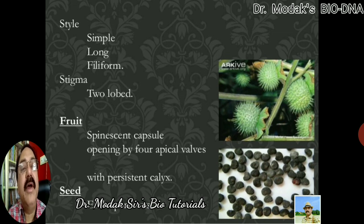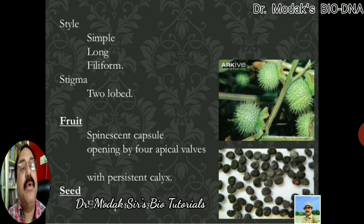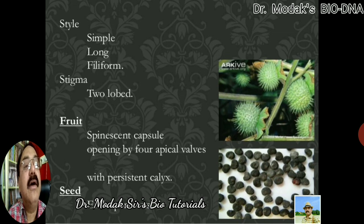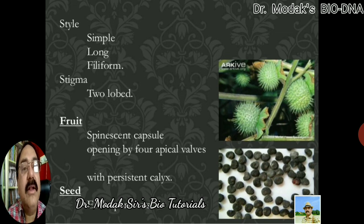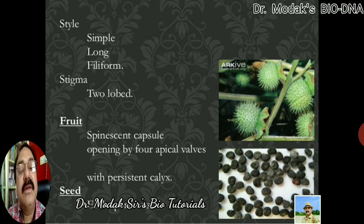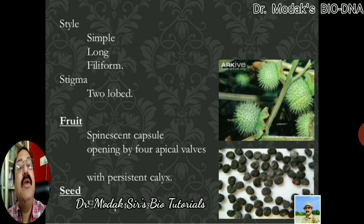The fruits are very catchy — they are spinous capsules — opening by four apical valves. They show persistent calyx, as mentioned — this is an important family feature. The green calyx is still visible below the fruit. In most cases calyx falls down by the time the fruit is formed, but this family shows persistent calyx, which is one of the most important characters of this family. The seeds are endospermic — they have endosperm in them.